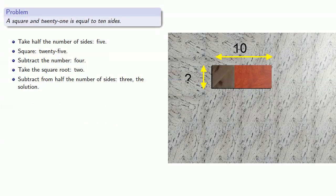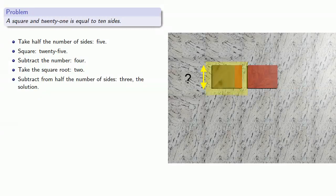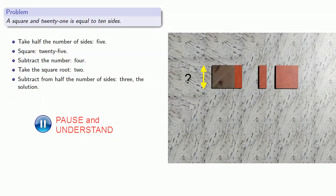So Al-Khwarizmi's first step is to take half the number of sides. And notice, if we cut this top side in half, the two figures are equal. Since the figure on the left consists of a square and a rectangle, the figure on the right also consists of a square and a rectangle. And the top length of the remaining figure is 5.